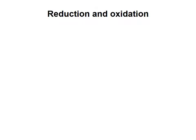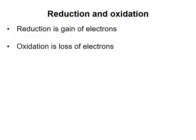So far in this module I have talked a lot about energy and chemical reactions. In addition to requiring energy, some biochemical processes require molecules to be reduced. Chemically speaking, reduction is the gain of electrons. Oxidation is the opposite of reduction and happens when a molecule loses electrons.